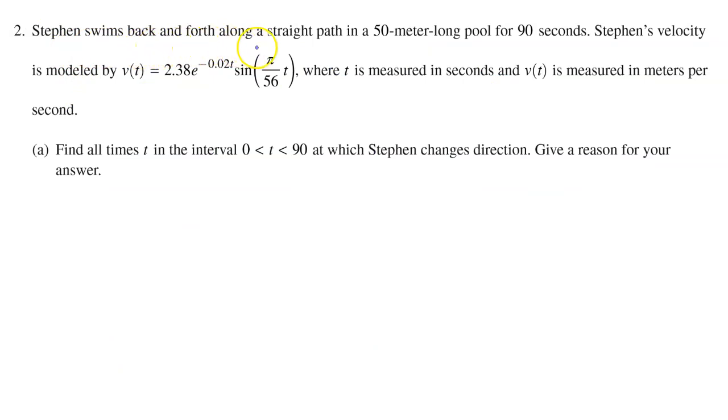Stephen swims back and forth along a straight path in a 50 meter long pool for 90 seconds. Stephen's velocity is modeled by v of t, which equals this expression, where t is measured in seconds and v of t is measured in meters per second. Part A: Find all times t in the interval between 0 and 90 at which Stephen changes direction. Give a reason for your answer.